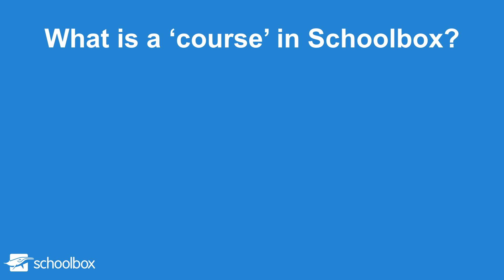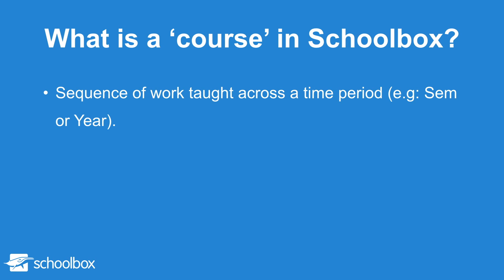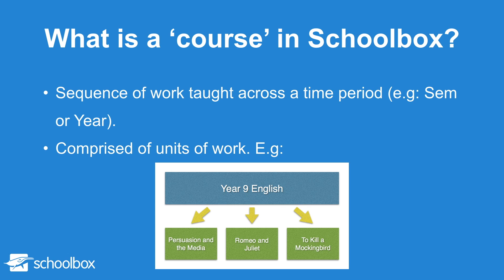Firstly it's important to understand how a course is defined in Schoolbox. You might have your own understanding of what a course is but this could be different to how it is technically defined in Schoolbox. In Schoolbox we understand a course to be a sequence of work taught across a time period such as a semester or year. Courses are comprised of units of work. For example, my Year 9 English course includes units called Persuasion and the Media, Romeo and Juliet, and To Kill a Mockingbird.